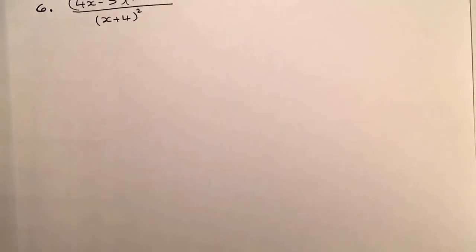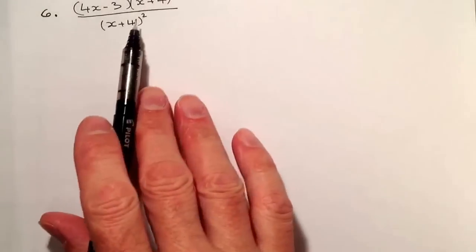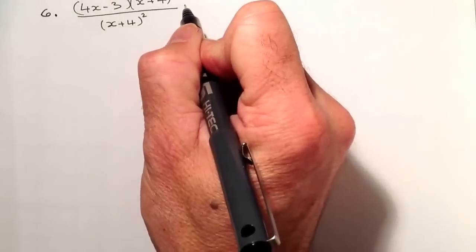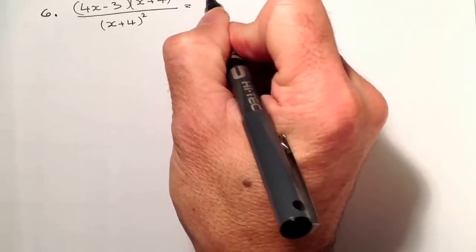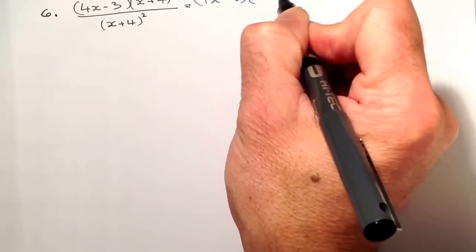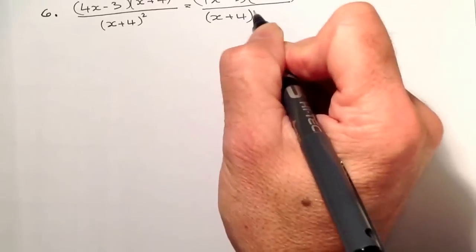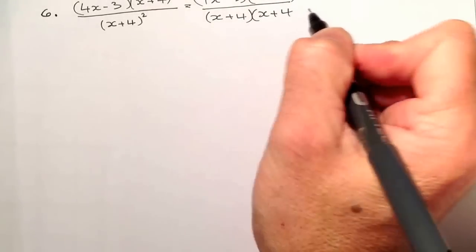So let's go ahead and do question 6. For question 6, what we've got is I'm going to expand the bottom bracket. Because that's squared, what I'm going to do is make that into two brackets on the bottom, because x plus 4 squared just means x plus 4 times x plus 4.